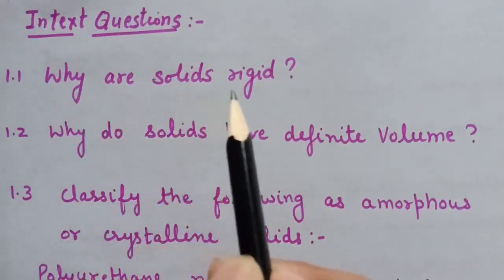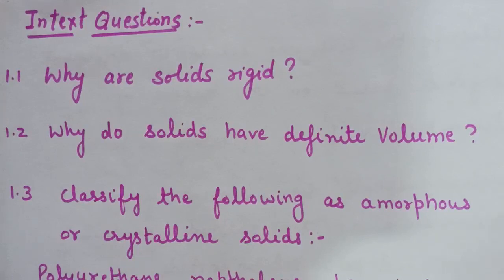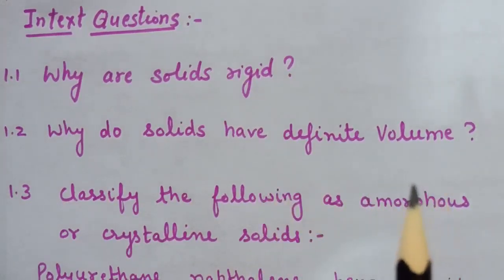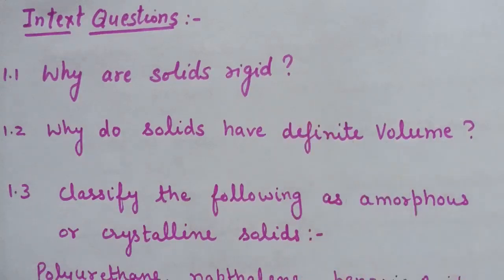NCERT in-text question 1: Why are solids rigid? In solids, the constituent particles are very closely packed and have fixed positions; they can only oscillate about their mean positions. Hence they are rigid. Question 2: Why do solids have a definite volume? The constituent particles have fixed positions and are not free to move, so they possess rigidity and therefore have a definite volume.